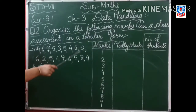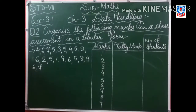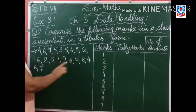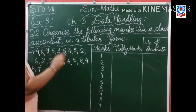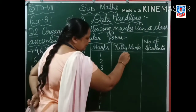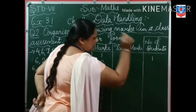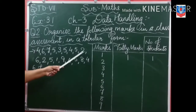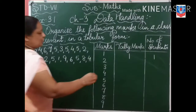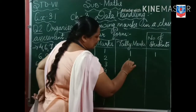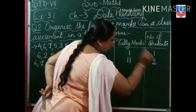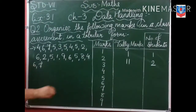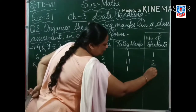Now we have to arrange these marks in tabular form. These are the marks given here. For one mark, how many students got it? Only one. So put the tally mark and write the number of students as one. Now, two marks — how many students got? Two. We will put the tally marks and write here two.